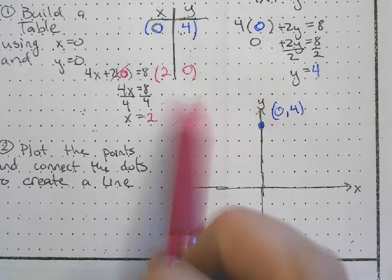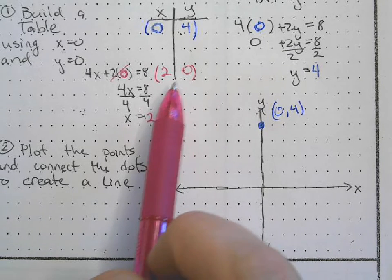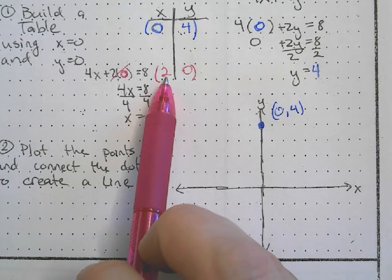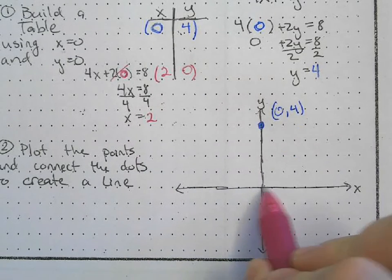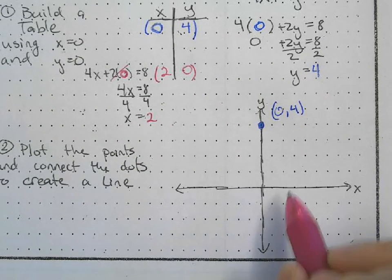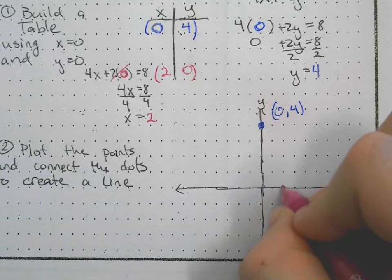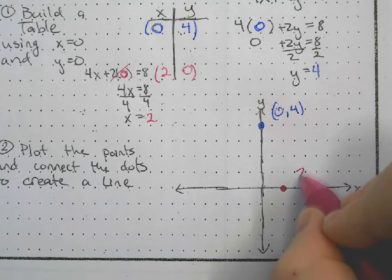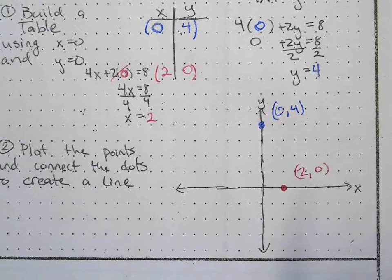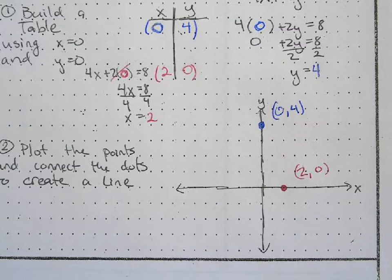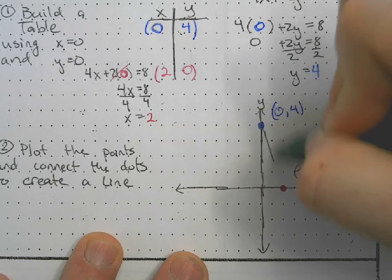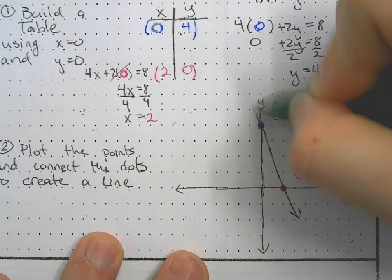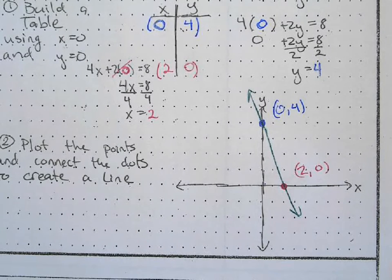Then we'll plot our x intercept, 2 comma 0. We go over 2 and then 0, so there's no movement up or down. Then we connect the dots.